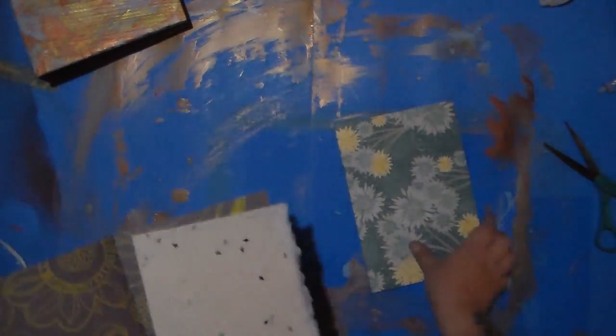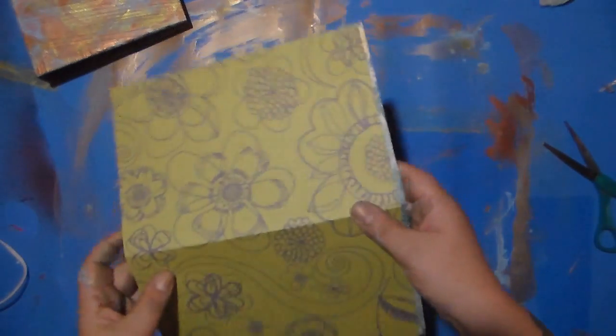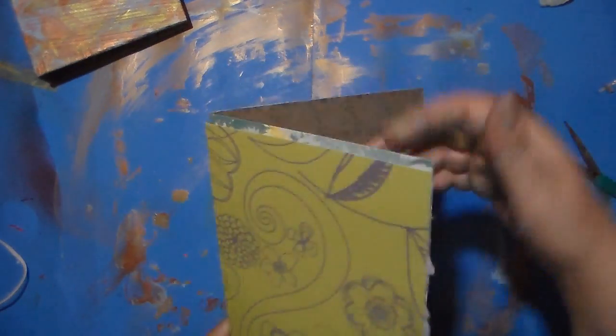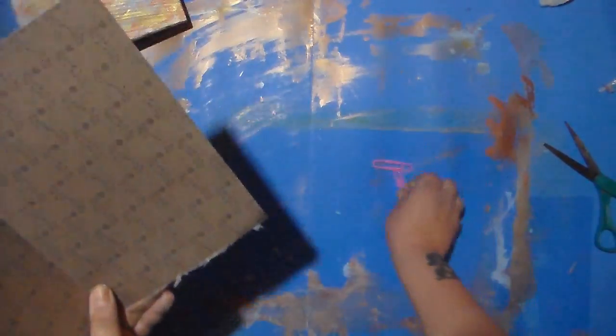And then open it, put your other piece in, open it up so they're kind of like this. I want mine so that the bottom lines up flush with the cover.